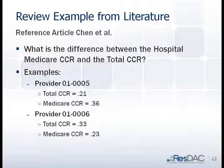No statistical analysis was done to determine whether this difference is significant — the point is simply that they're not going to be the same. For another provider, the total cost-to-charge ratio was 0.33 and the Medicare-specific was 0.23. So cost-to-charge ratios are all over the place by hospital.